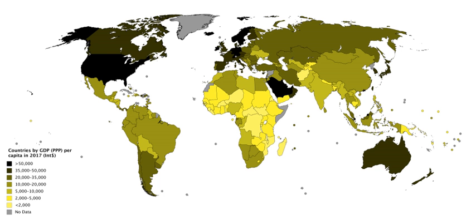The expenditure approach works on the principle that all of the product must be bought by somebody, therefore the value of the total product must be equal to people's total expenditures in buying things. The income approach works on the principle that the incomes of the productive factors must be equal to the value of their product, and determines GDP by finding the sum of all producers' incomes.